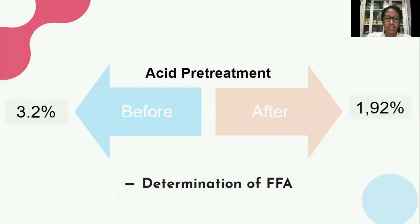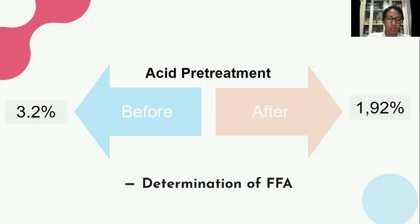This is the result and analysis about determination of FFA. In used cooking oil, the result of determining the free fatty acid content was 3.2%. A very good free fatty acid content is less than 1%, so it can be seen that the levels of free fatty acid in used cooking oil are high. However, after being given acid pretreatment with H2SO4 acid catalyst, the free fatty acid content in used cooking oil became 1.92%. Although the used cooking oil has decreased levels of free fatty acids, this level cannot be called good because it is not less than or equal to 1%.